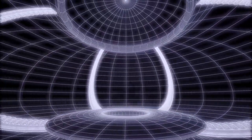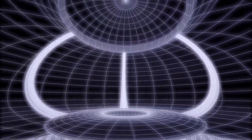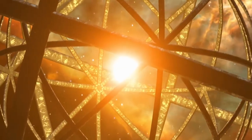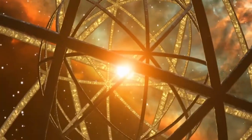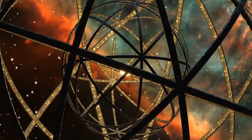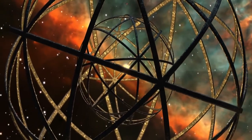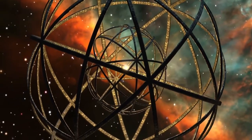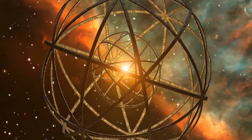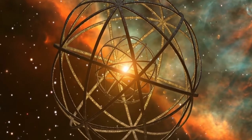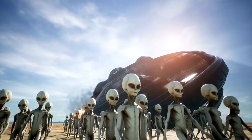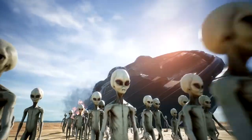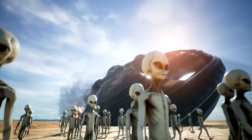An alien megastructure. This is the most speculative and exciting hypothesis, which suggests that an advanced civilization has built a giant structure around the star to harvest its energy. This could explain the large and irregular dimming events, as the structure would have different shapes and sizes and move around the star. However, this hypothesis has many problems, such as why the aliens would not communicate with us or why they would need so much energy.